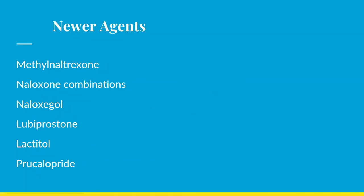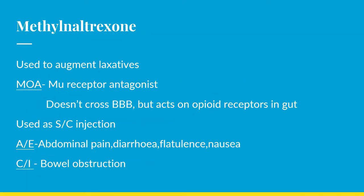Newer agents in laxative management include methylnaltrexone, naloxone combination, naloxegol, lubiprostone, lacitol, and prucalopride. Methylnaltrexone is not meant to replace existing laxatives — it is only used to augment them when the patient is not responding to normal laxatives even after titrating doses and using rectal products. The mechanism of action of methylnaltrexone is that it is a mu-receptor antagonist. Its major advantage is that it does not cross the blood-brain barrier but acts on opioid receptors in the gut, so it does not reverse the effectiveness of pain management. Methylnaltrexone is administered as a subcutaneous injection. Adverse effects include abdominal pain, diarrhea, flatulence, and nausea. It is contraindicated in bowel obstruction.